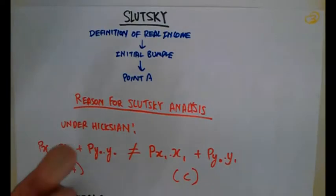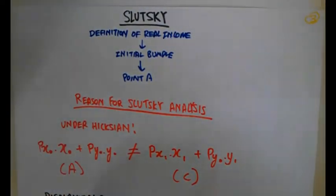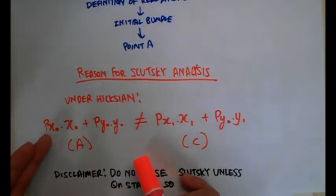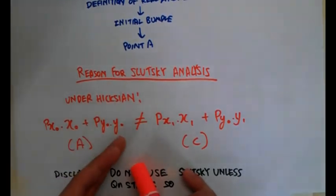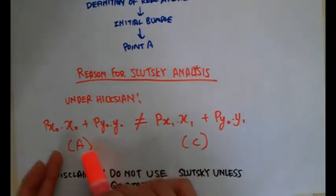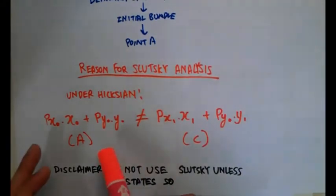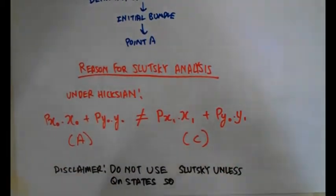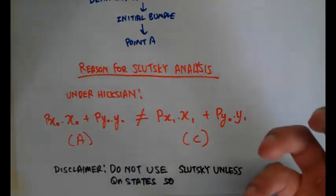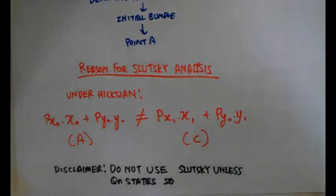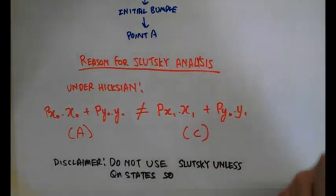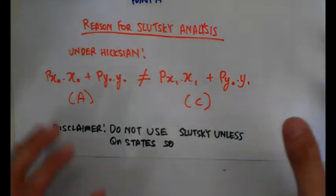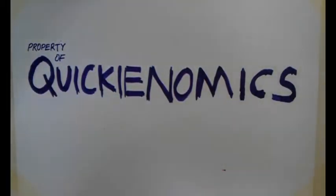The reason for a different definition of real income is this: under the Hicksian definition, if we set up the budget equation — price of X times quantity of X plus price of Y times quantity of Y — for points A and C, you realize that the equation at A doesn't always equal that at C, because of the price change and quantity change. So what Slutsky is worried about is that under the Hicksian definition, you don't really have the same real income due to a change in actual income. Therefore, a new type of analysis is required. A disclaimer: do not use a Slutsky analysis unless the question states so.